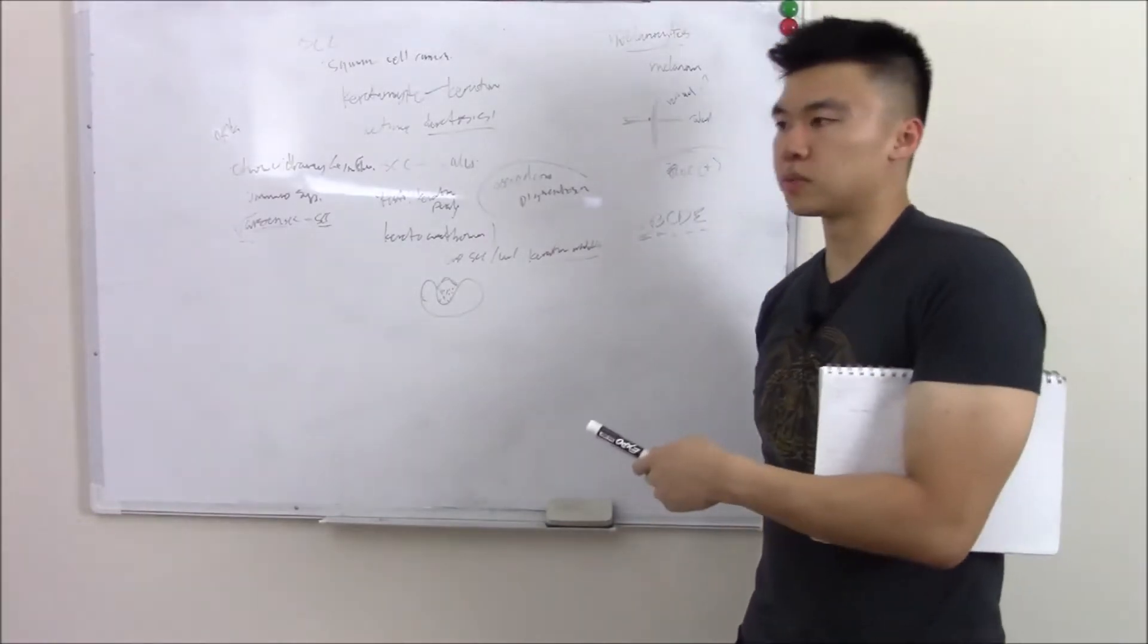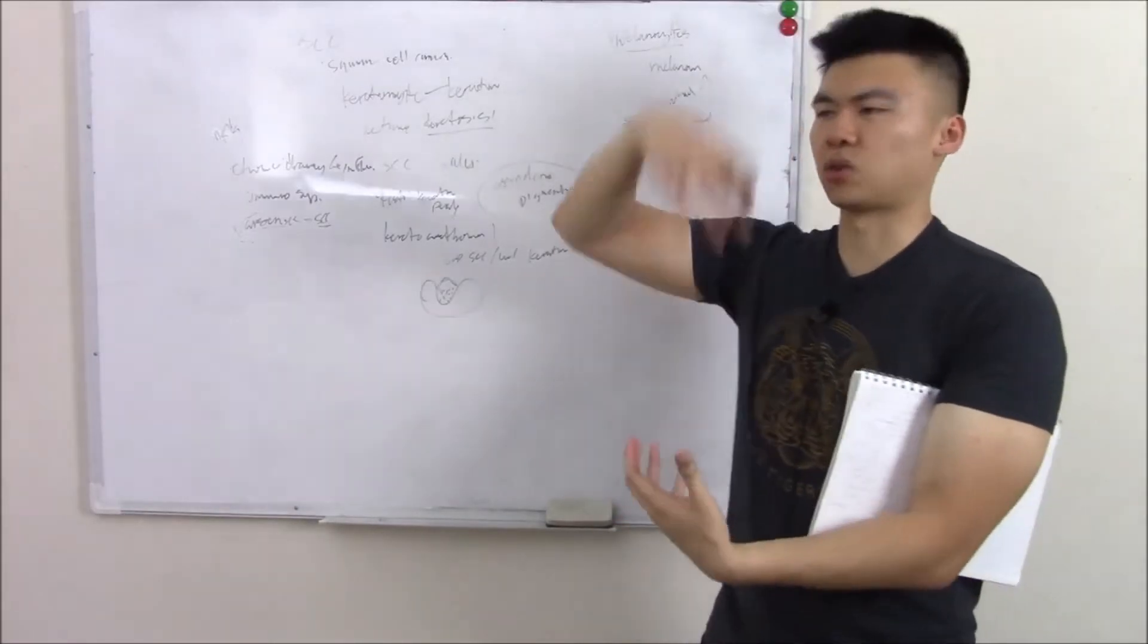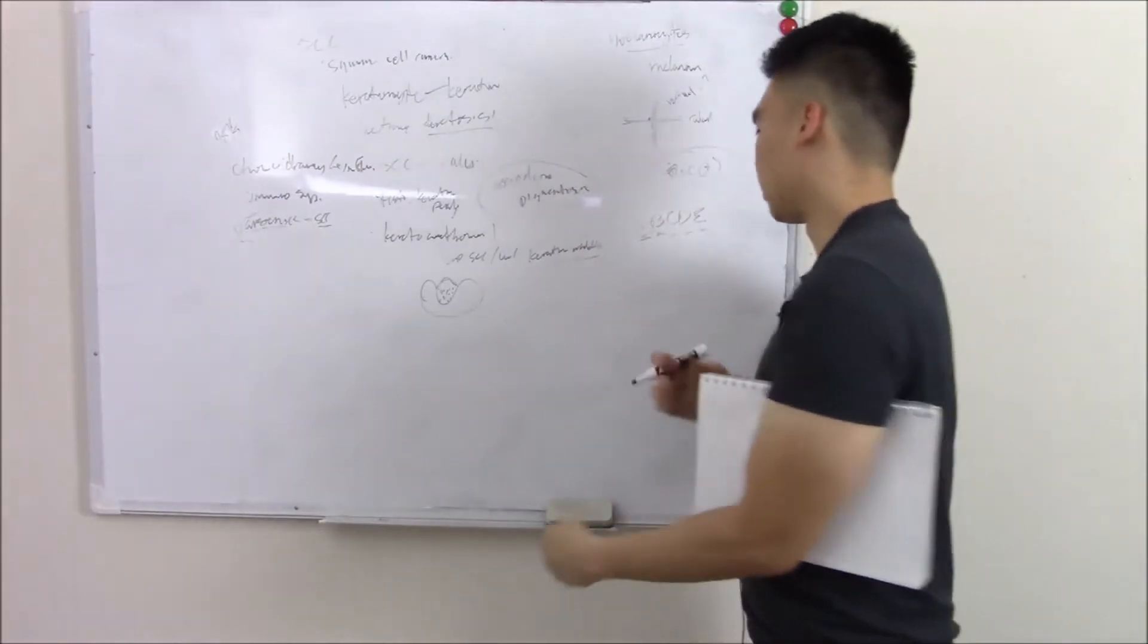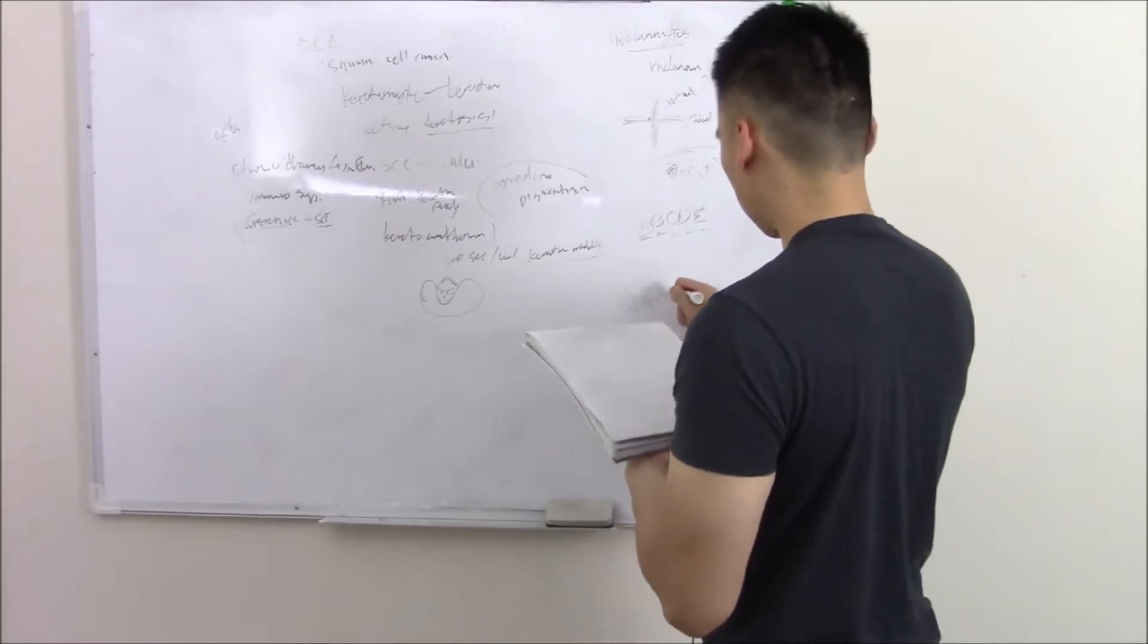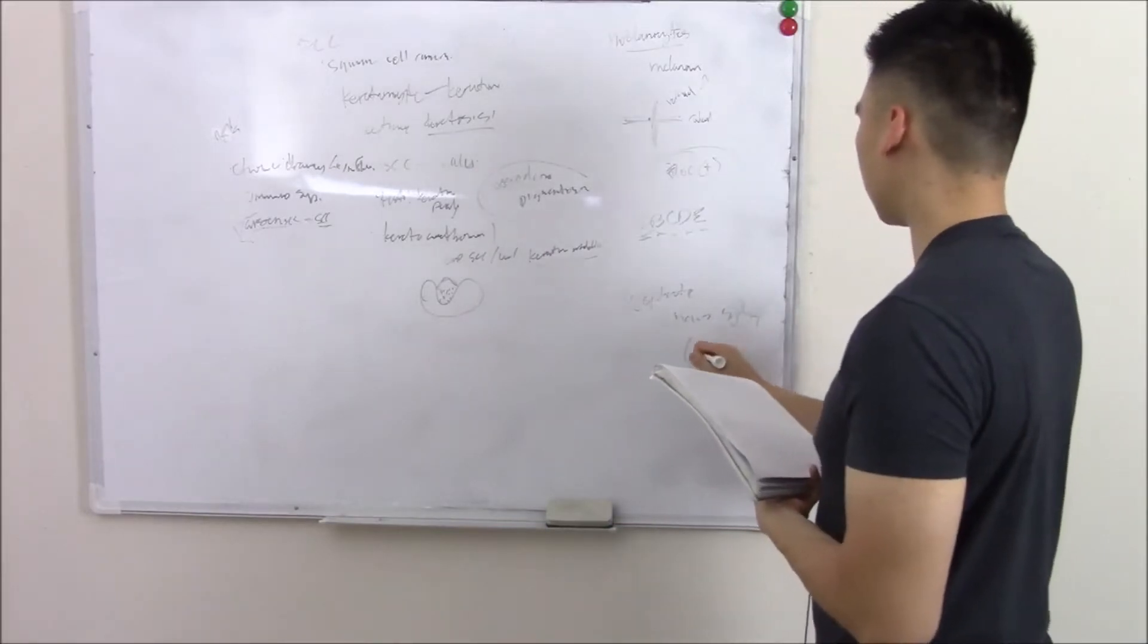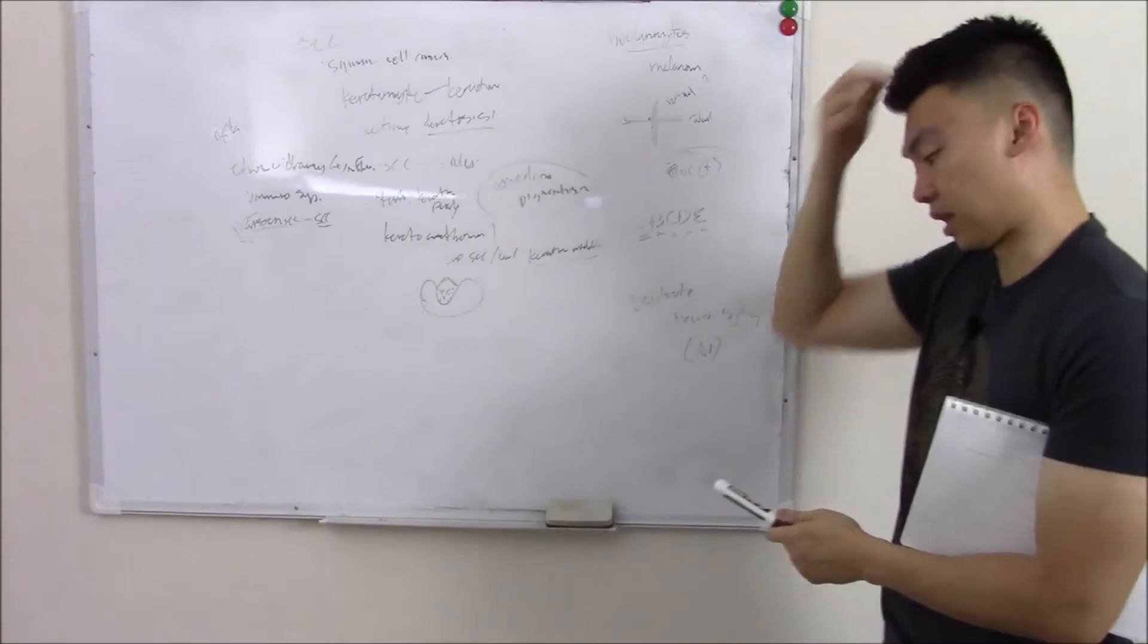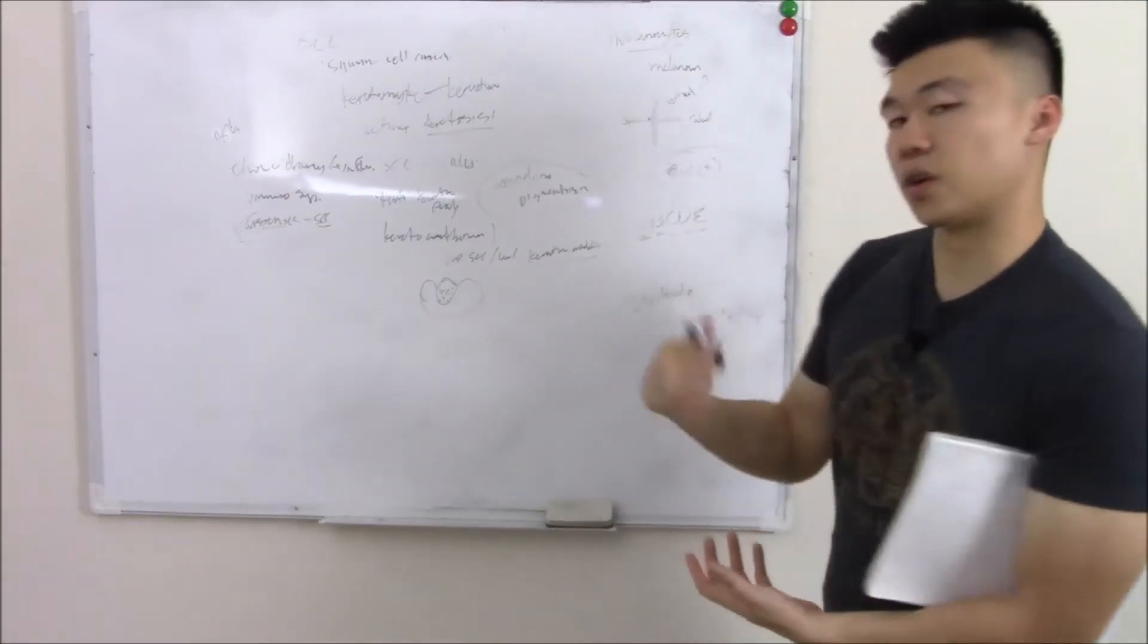So dysplastic moles put you at a risk. You can have an inherited syndrome or you just have a crop of dysplastic moles. You just have dysplastic moles all over the place. We call that dysplastic nevus syndrome. And it is an autosomal dominant disorder. And you can guess from the name, you just have a ton of dysplastic nevus. And it just puts you at increased risk because there's more chances of this turning into cancer.